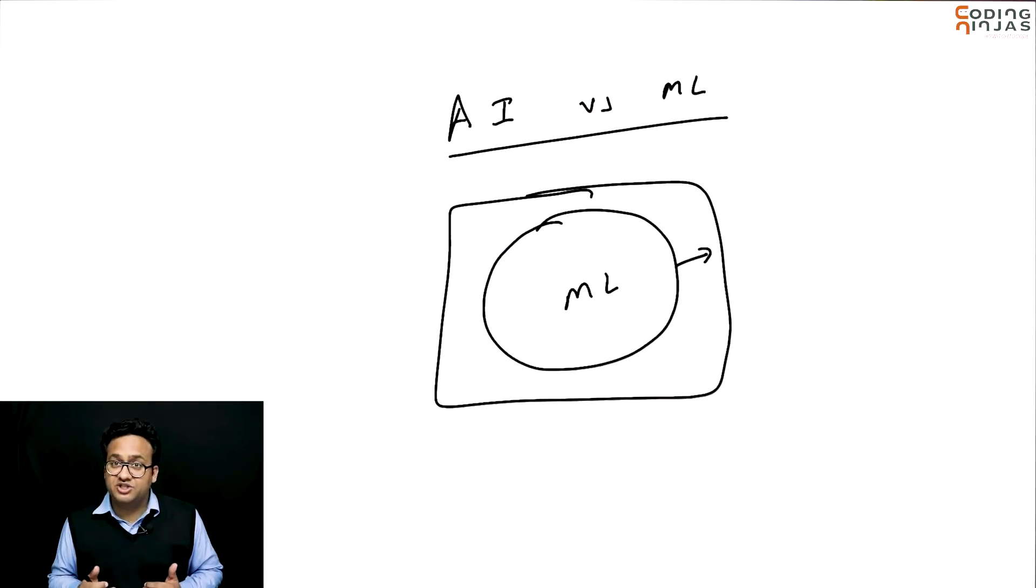The idea of machine learning is that as a developer, as a programmer, I should not have to exactly write if this happens, then you need to do this. That is basically the whole idea of AI and machine learning.